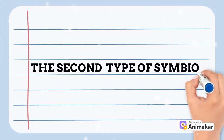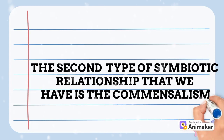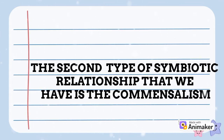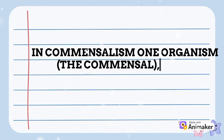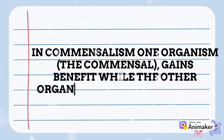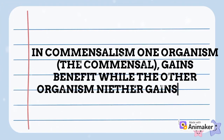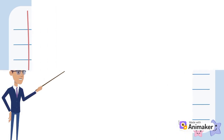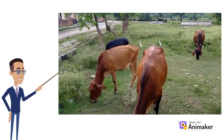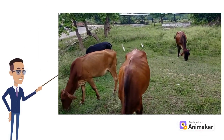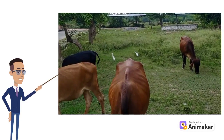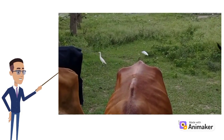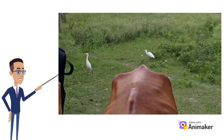The second symbiotic relationship is commensalism. In commensalism, one organism which is the commensal gains benefit while the other organism neither gains nor is harmed. An example may be viewed as it relates to cattle and egrets. The egrets perch on the back of cows and gain food by eating ticks from the cow's skin.